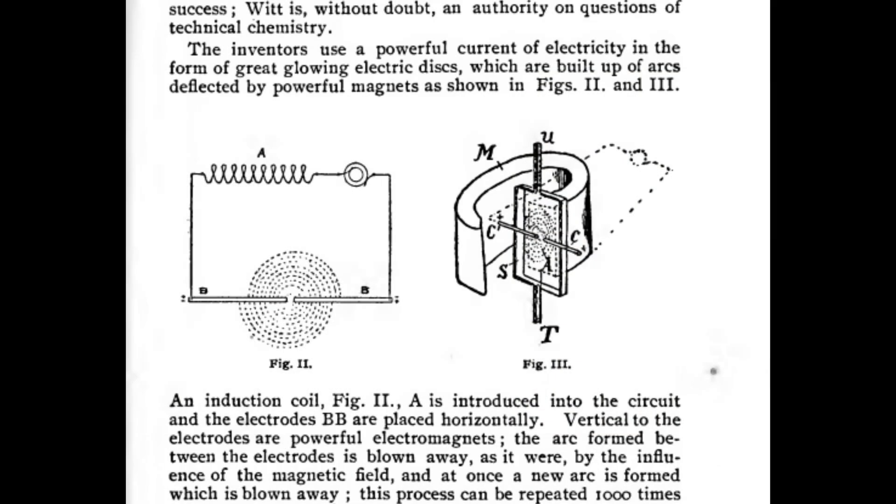An electrical arc was formed between two coaxial water-cooled copper tube electrodes powered by a high-voltage alternating current of 5kV at 50 Hz. A strong static magnetic field generated by a nearby electromagnet spread the arc into a thin disk by the Lorentz force.